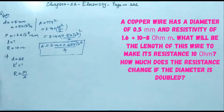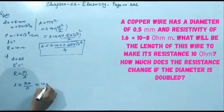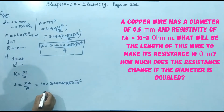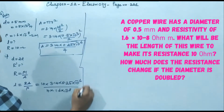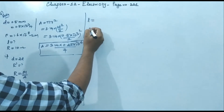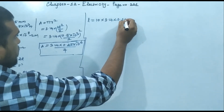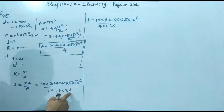Now they are asking for length, so rearranging: L = RA/ρ. Substituting R = 10 ohm, area = 3.14 × 0.25 × 10⁻⁶ / 4, and rho = 1.6 × 10⁻⁸, we get L = 10 × (3.14 × 0.25 × 10⁻⁶ / 4) divided by 1.6 × 10⁻⁸.